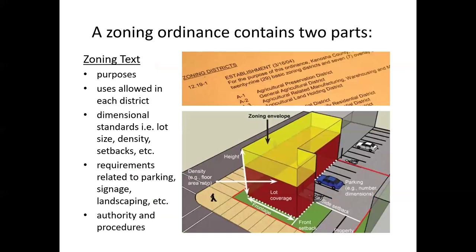The second part is the zoning text. It will include the purposes of the entire ordinance and perhaps specific zoning districts. It'll list the permitted, conditional, and prohibited uses in each district, and it'll have dimensional standards — lot sizes, setbacks, height limits, density. It may also have pieces related to parking, signage, and the authorities: where in statute does it say this can happen, who does what, and procedures for enforcement.